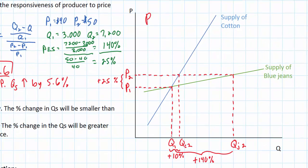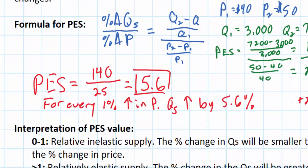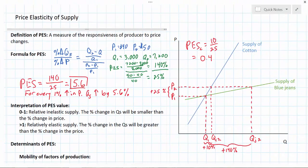So we can calculate the PES for cotton between P1 and P2. The percent increase in the quantity supplied was only 10% following a 25% increase in the price of cotton. This means that the PES for cotton is only 0.4, whereas the PES for blue jeans — which are made out of cotton — was much greater at 5.6. What can explain the differences in the price elasticities of supply for the primary good that goes into making blue jeans and for blue jeans themselves?